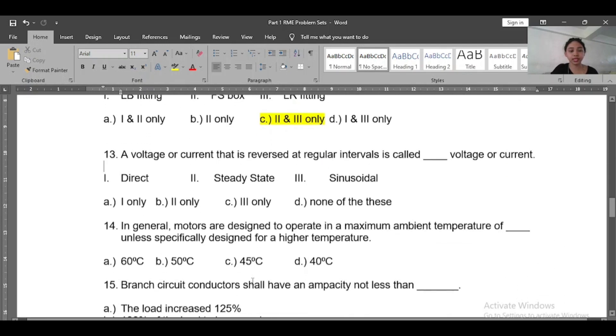Number thirteen: A voltage or current that is reversed at regular intervals is called blank voltage or current. So direct, steady state, sinusoidal - what is that? A voltage or current that is reversed at regular intervals, it is called sinusoidal. So it is three, or D.